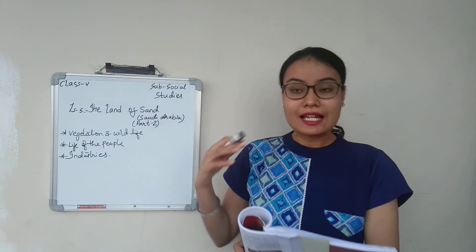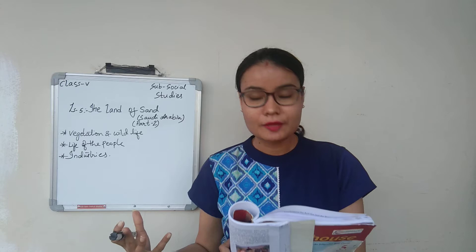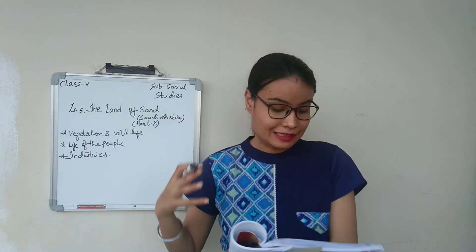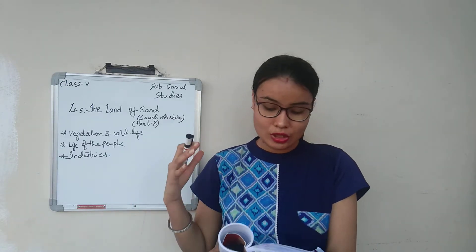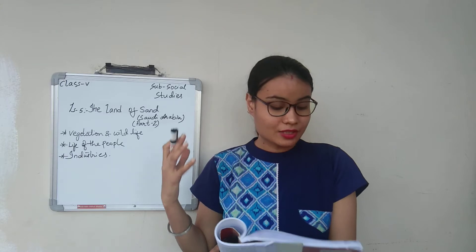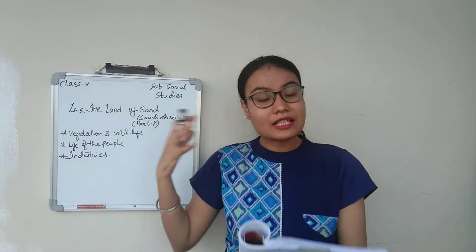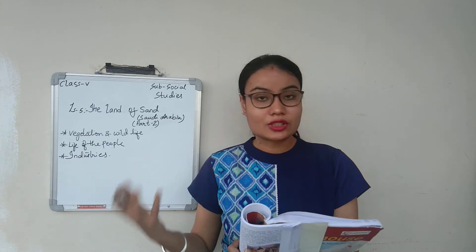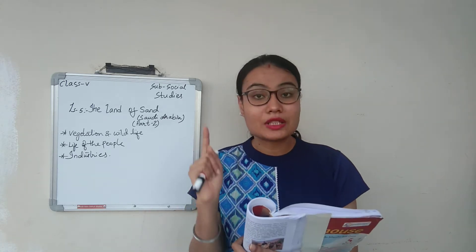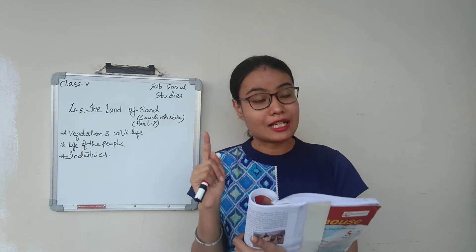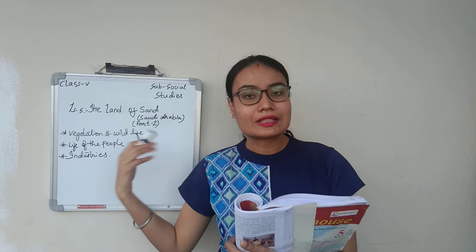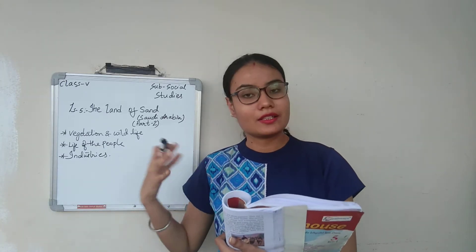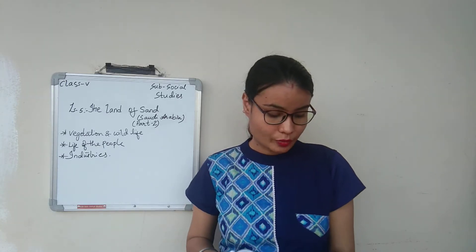Cactus has adapted to that environment. In that type of weather, the cactus plant can easily grow because it has a soft, fleshy stem which helps it to store water. It does not have leaves, but it has soft spines which can also protect other animals. That is why cactus grows abundantly over there.